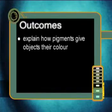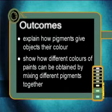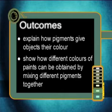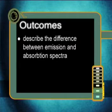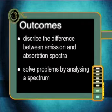By the end of this lesson, you should be able to explain how pigments give objects their colour, show how different colours of paints can be obtained by mixing different pigments together, describe the difference between emission and absorption spectra, and solve problems by analysing a spectrum.